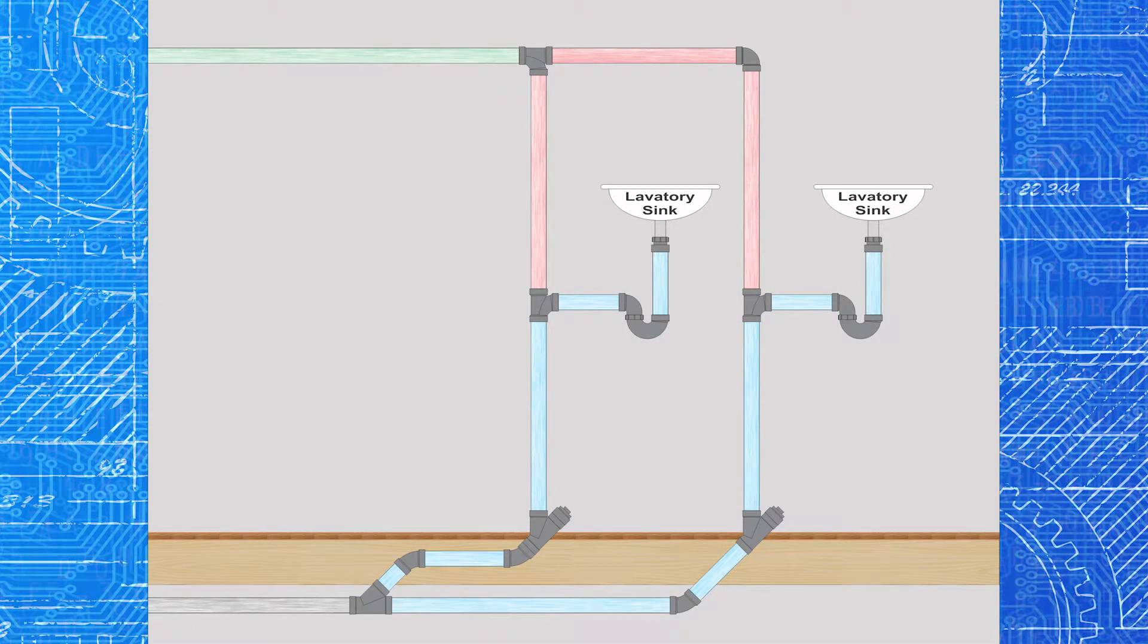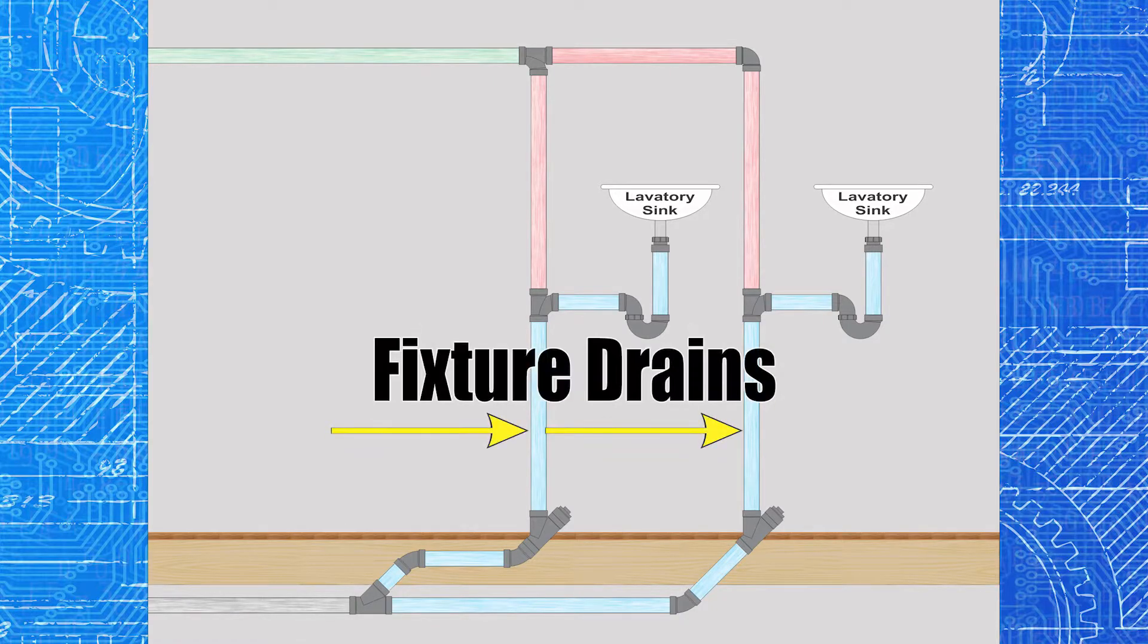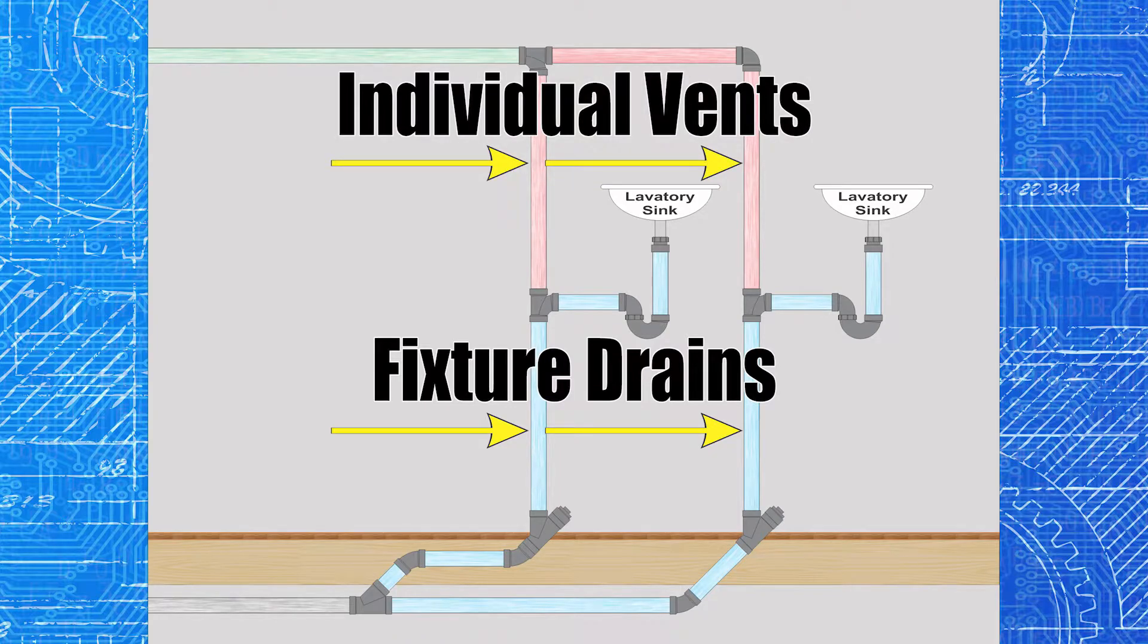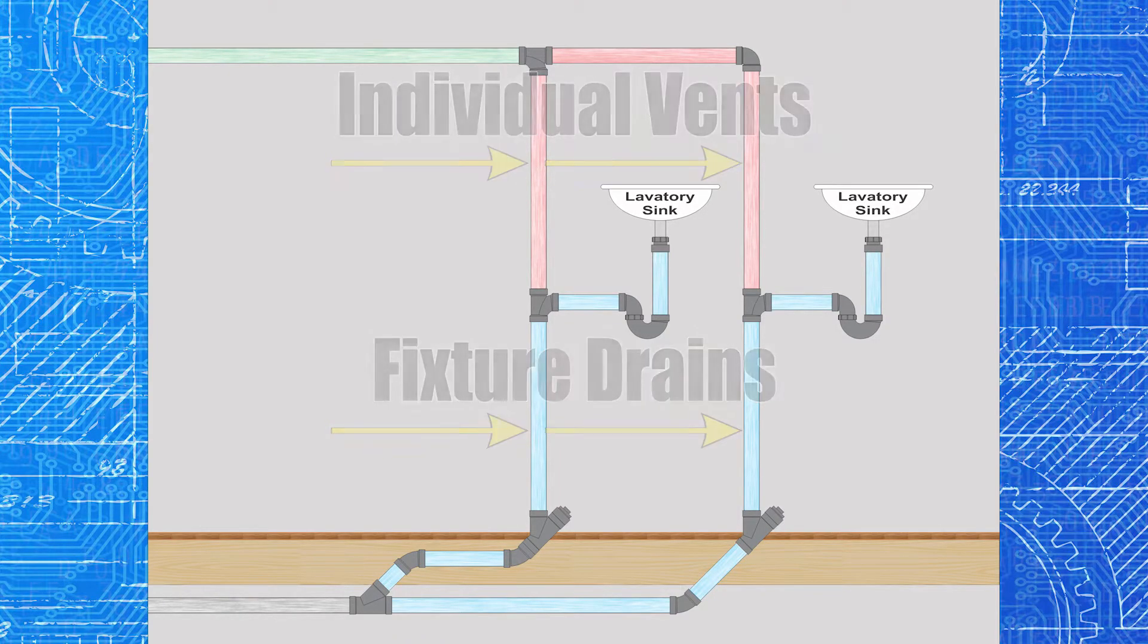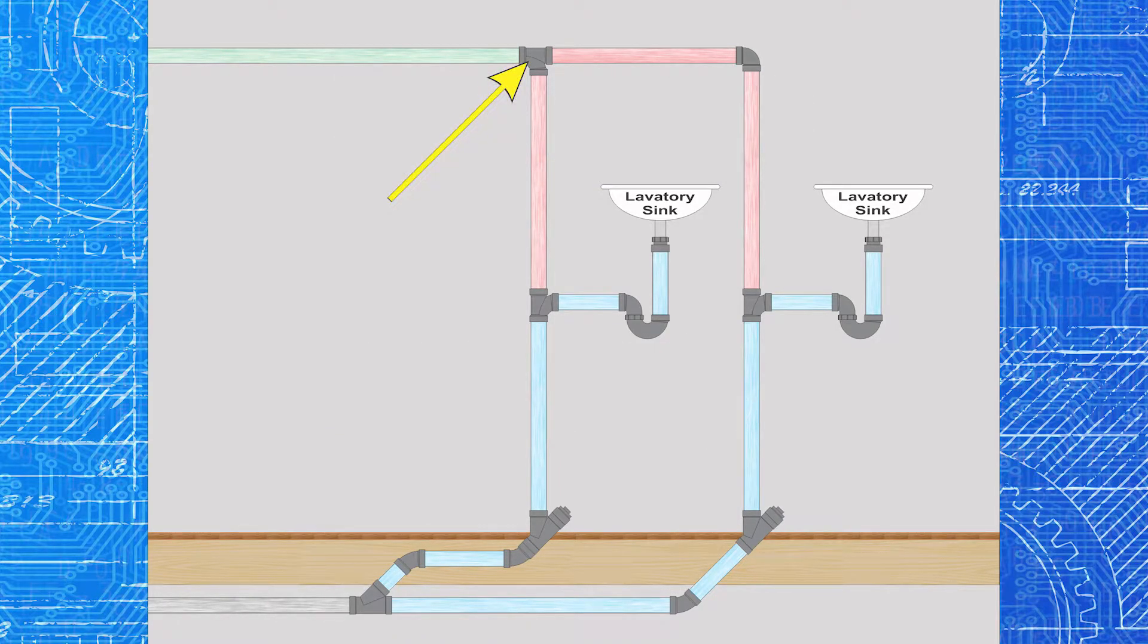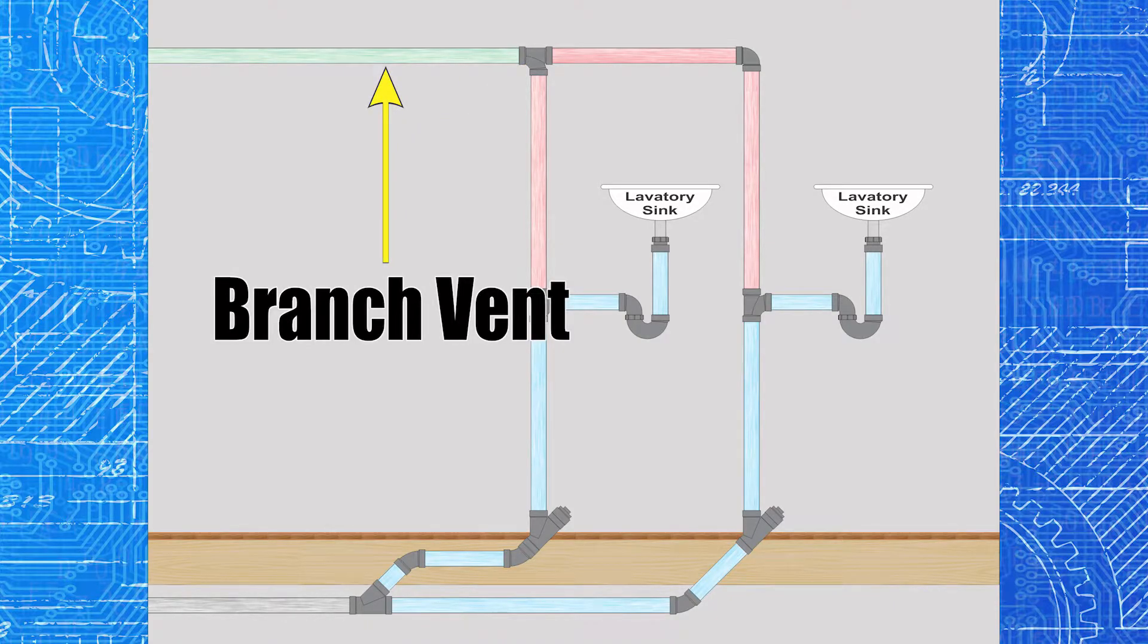To illustrate this, let's go through a couple pictures here. The first picture is two lav sinks with fixture drains and individual vents. Those are the red vents coming off the top. When the two individual vents join together, it becomes a branch vent. That's the pipe in green.